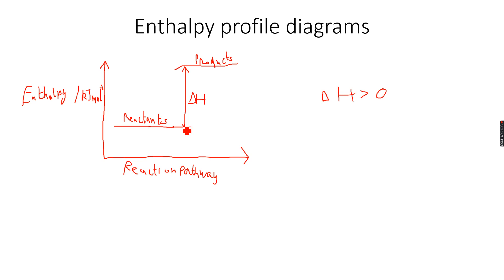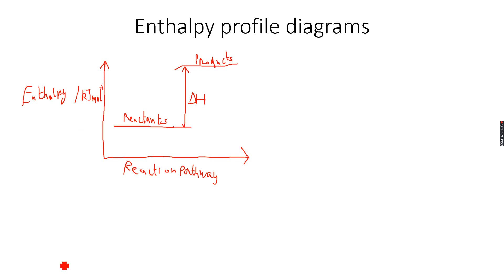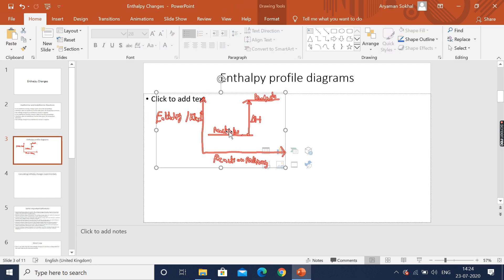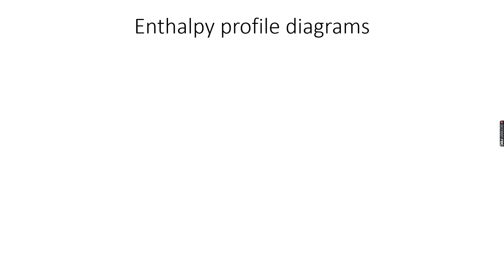The problem with this diagram is that it is quite inaccurate, because the reactants do not directly go to the products. This is something you will study at A-level when you do reaction kinetics, but for now you need to know that the reactants don't go directly to the products. So what you need to do is make a diagram which looks like this.